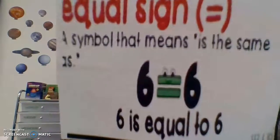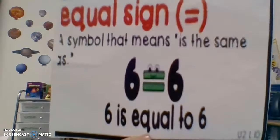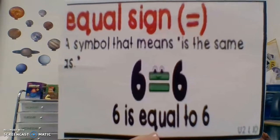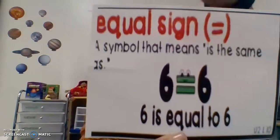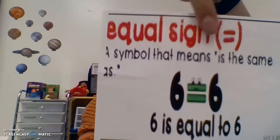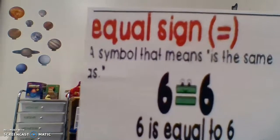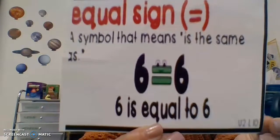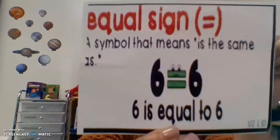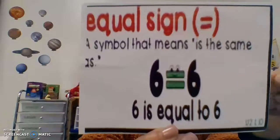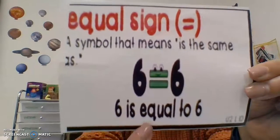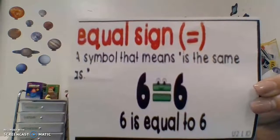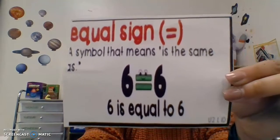Our next new word is equal sign. The equal sign is a symbol that means 'is the same.' This is our equal sign — the two lines. Six equals six because they are the same; six is equal to six. Equal sign means they are the same.